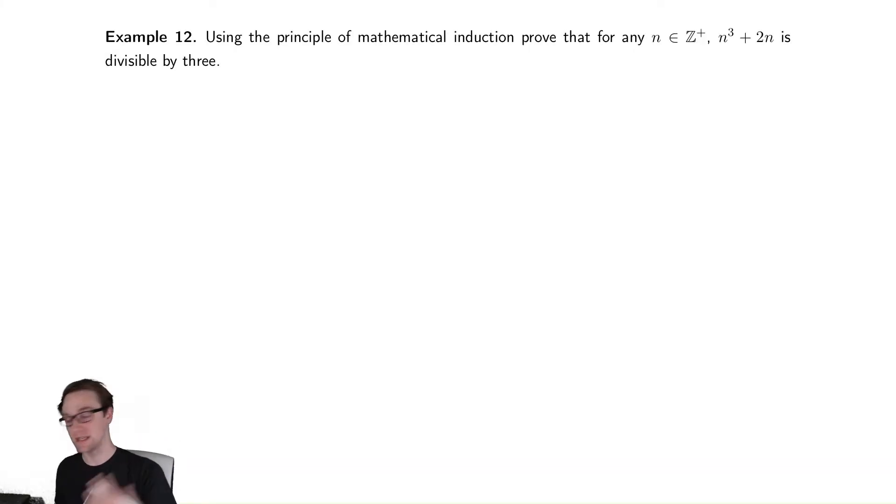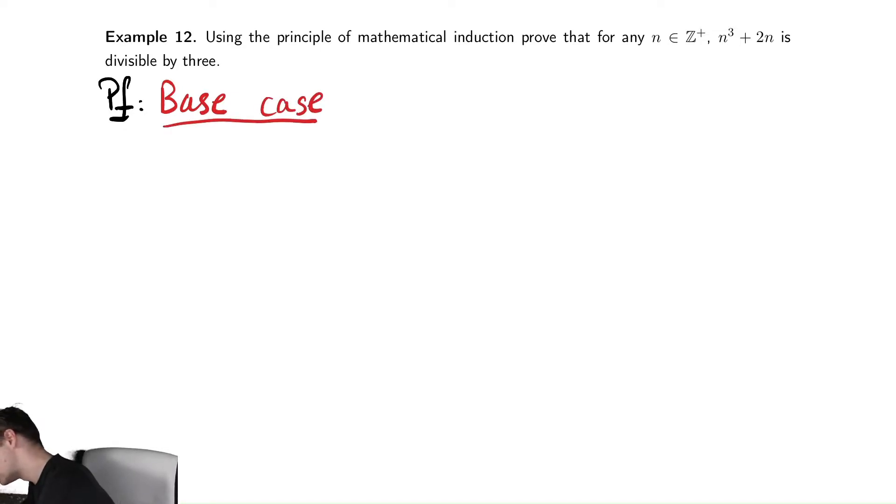Just like our previous example, we're going to begin with our base case. So we have our proof. We first need to prove the base case. The base case here is going to be that n is equal to 1, because this is the positive integers, Z plus is the positive integers. So this is n equals 1.